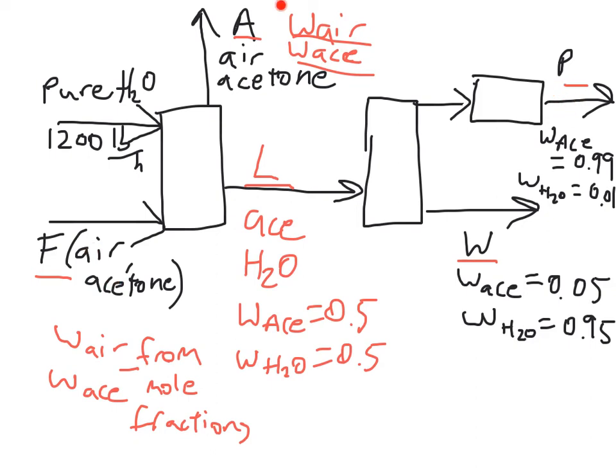And once we know F, we know everything except this stream right here, and we can go ahead and do a material balance around the absorption column to get what the flow rate of A is, and what the mass fraction is for the air and also the acetone. And so that's pretty much it for this problem.